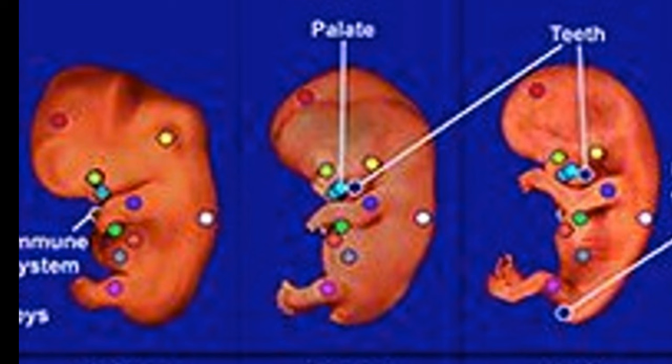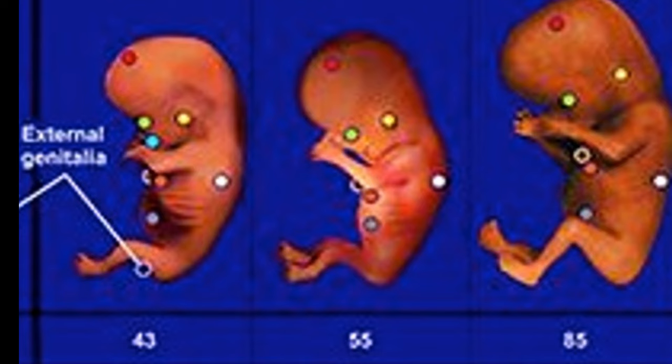In week 9, marking the beginning of the fetal phase, the baby's genitals differentiate more into their respective sexes. The neck develops and thumb sucking begins. The baby is about 43 mm long.